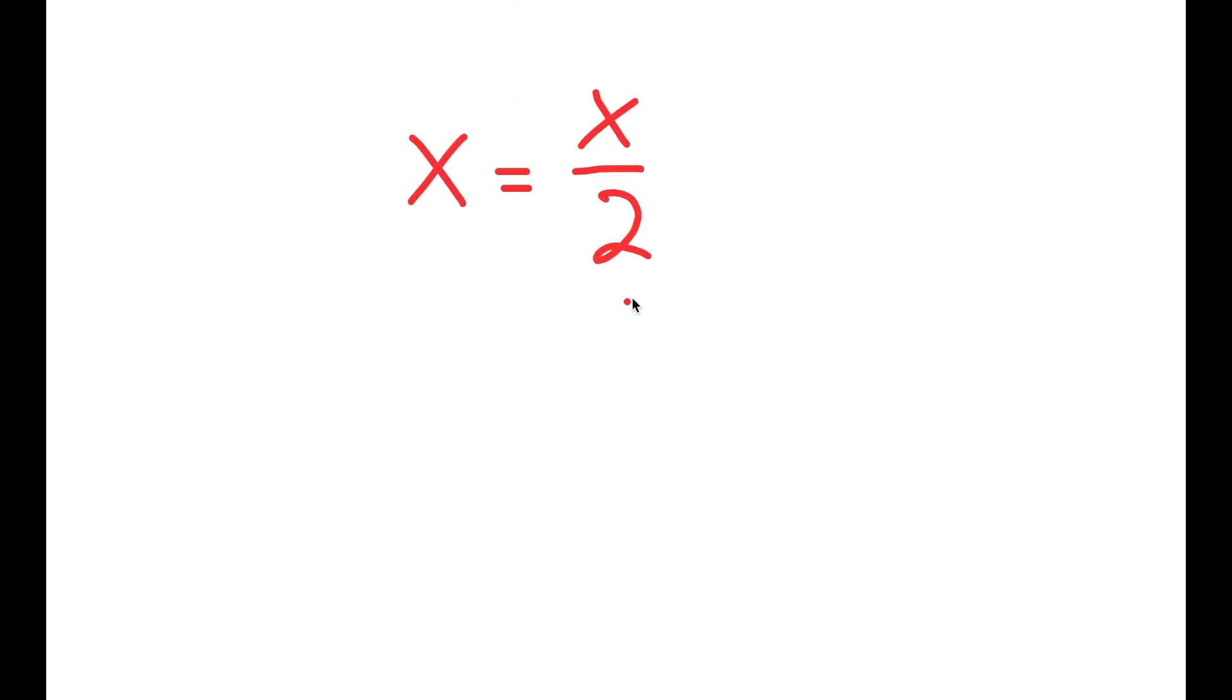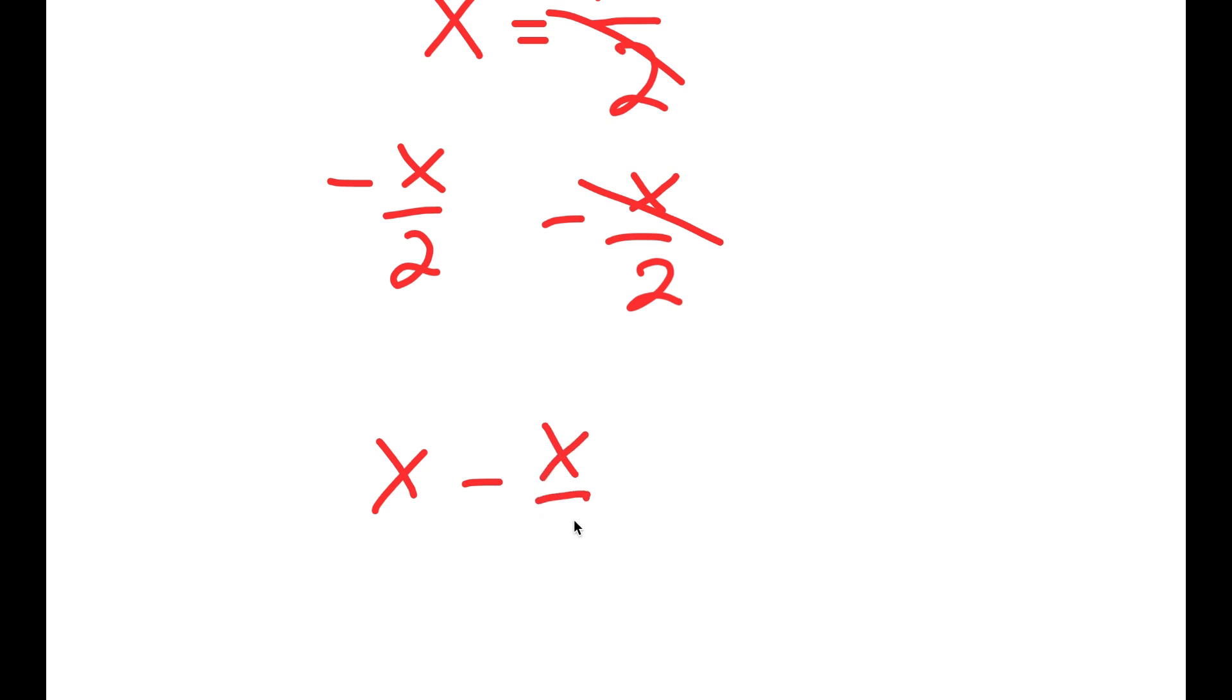Alright. So to solve this problem, I'm going to do the same thing which I did to our first problem. I'm going to subtract x over 2 on both sides. So I get x minus x over 2 is equal to 0.